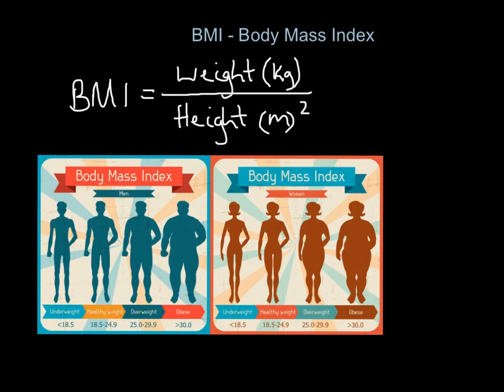As you can see, we have a body mass index chart. It doesn't matter for males or females - if your body mass index is less than 18.5, you are categorized as underweight. 18.5 to 24.9, you are in the healthy weight category. If you are 25 to 29.9, you are in the overweight category. And if you are greater than 30, you are categorized as being obese. Anything less than 18.5 is underweight; 18.5 to just under 25 is healthy weight; 25 to just under 30 is overweight; and anything over 30 is obese.